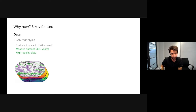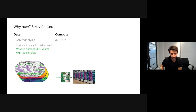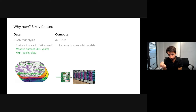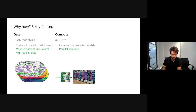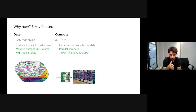The second key factor is compute. We train on 32 TPUs, following the trend of increasing scale in machine learning. Our model itself is quite small, but each input-output example is very large, so we need the compute. This differs from traditional weather models that used around 10,000 CPUs. Now we use a few TPUs, and at inference time only a single TPU — essentially like a high-end GPU. We can do in one minute what used to take a server one hour and thousands of CPUs.